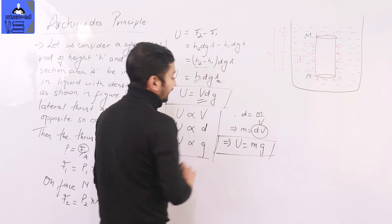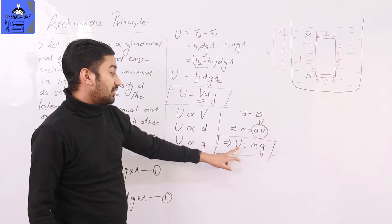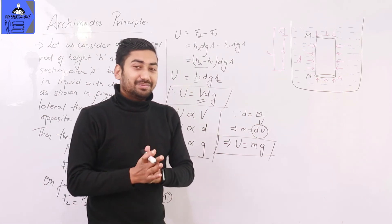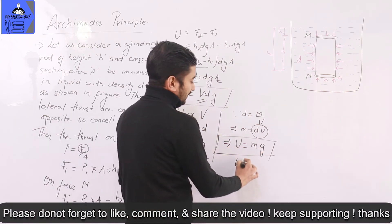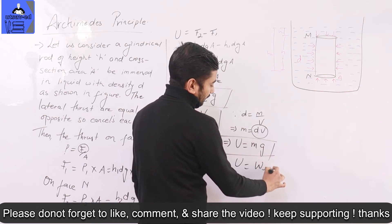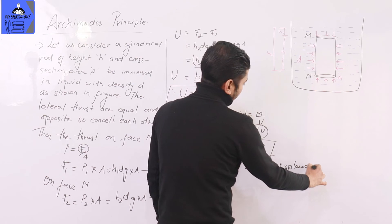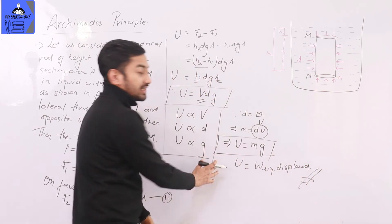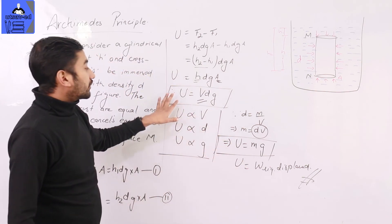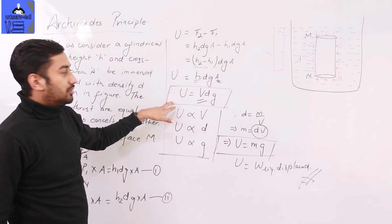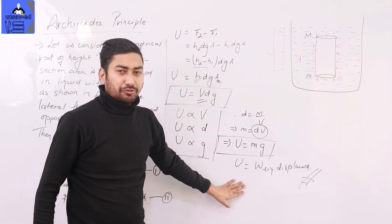This implies that upthrust equals the weight of the liquid displaced, since weight equals m·g. This is exactly the statement of Archimedes' Principle. So this is the mathematical verification of Archimedes' Principle — the upthrust on a body equals the weight of the liquid displaced by it.